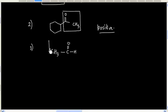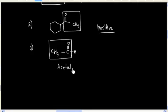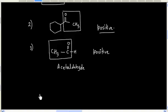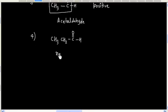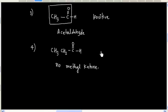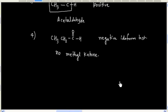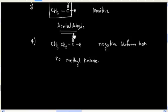Now if I have this aldehyde — that is acetaldehyde — it has a methyl ketone group, so it will give a positive Iodoform test. Now let us consider this other aldehyde: this aldehyde has no methyl ketone group, so it will give a negative Iodoform test. So we can say among aldehydes, only acetaldehyde gives a positive Iodoform test.